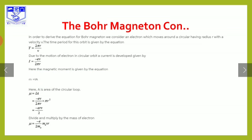Due to the motion of the electron in a circular orbit, a current is derived. The current for the circular motion of the electron is given by the Ampere circuit with radius r. The current I is given by e divided by 2πr times v. The magnetic moment is then given by the equation: magnetic moment μ = I × A, where A is the area of the loop.